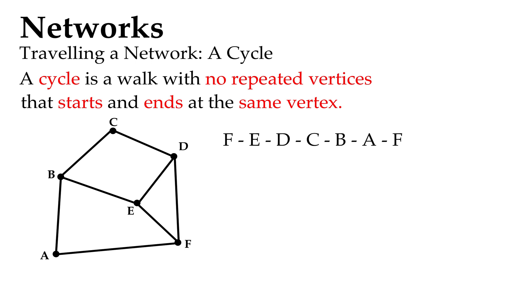Let's have a look at an example. We have F to E to D to C down to B down to A and back to the starting position of F. So we haven't repeated any vertices at all, and we've started and ended at the same place, the F vertex.